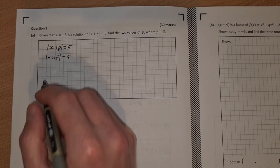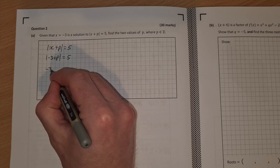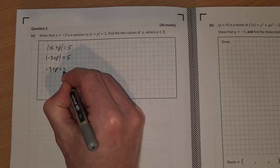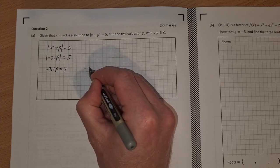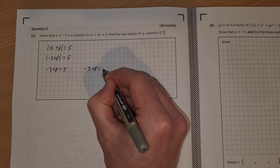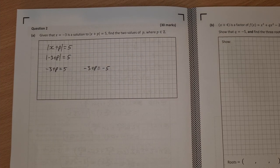And then to solve a modulus equation, you could square both sides or you could just say minus 3 plus p is equal to 5 and minus 3 plus p is equal to minus 5. So let it equal to plus and minus the other side.